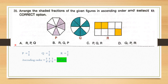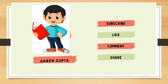Question number 35. Arrange the shaded fractions of the given figures in ascending order. Figure P has 8 portions with 4 shaded: 4 by 8. Figure Q has 8 portions with 5 shaded: 5 by 8. Figure R has 8 portions with 3 shaded: 3 by 8. In ascending order: R, then P, then Q. The correct answer is option A: R, P, Q. Make sure to subscribe, like, comment and share. Thank you.